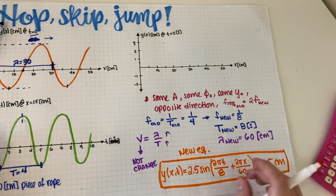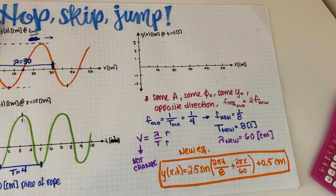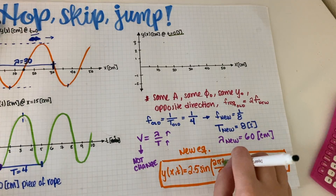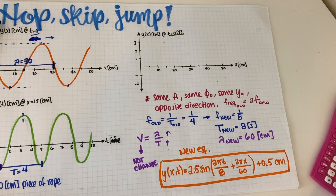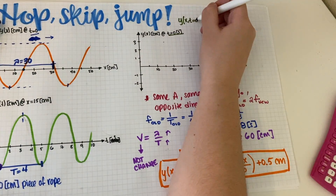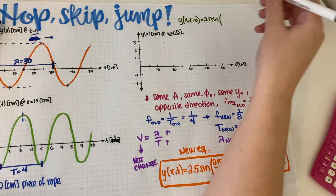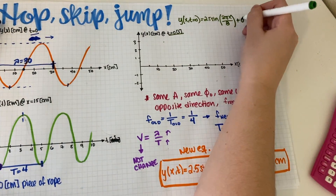For part C, we plot y versus x at t equals zero for this new wave. Substituting t equals zero eliminates the time term, leaving: y equals 2.5 sine of (2π x divided by 60) plus 0.5. We need to make a graph of this function.